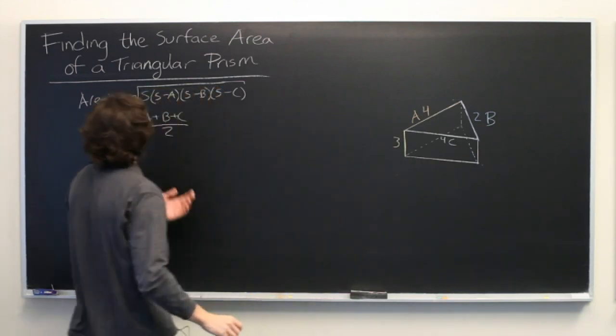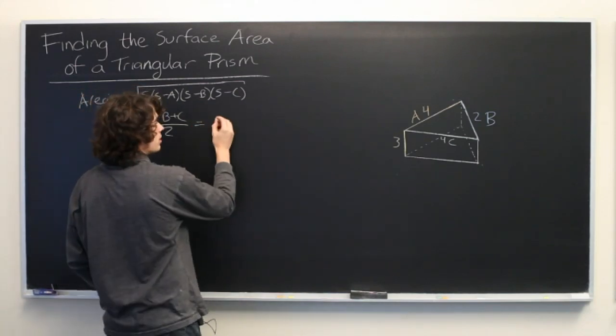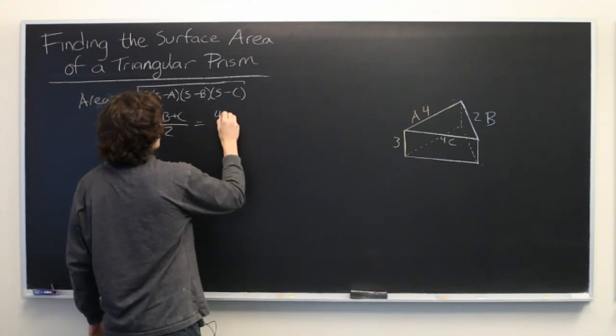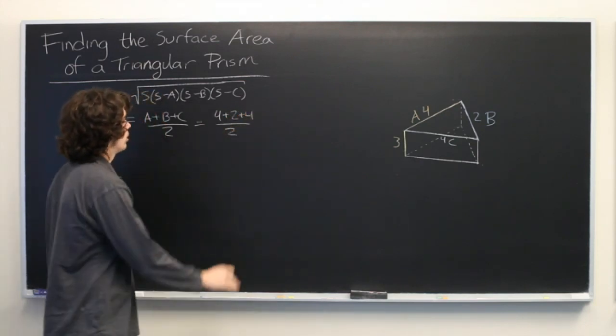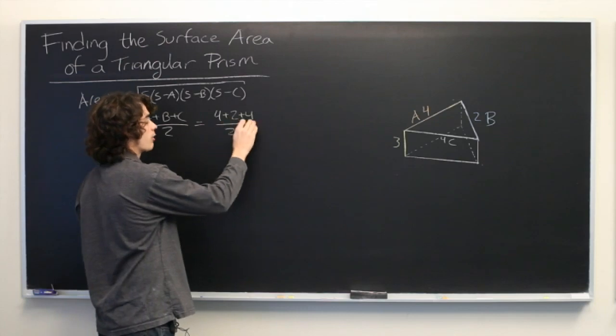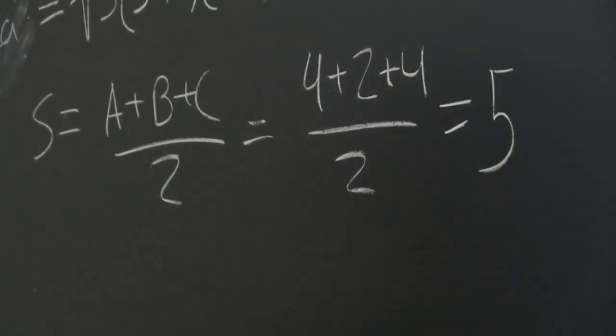So let's go ahead and start computing these numbers. A plus B plus C, we get 4 plus 2 plus 4 all over 2. 4 plus 2 is 6, 6 plus 4 is 10, 10 over 2 is 5. Great.